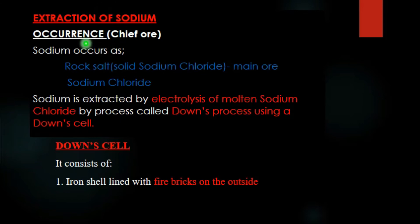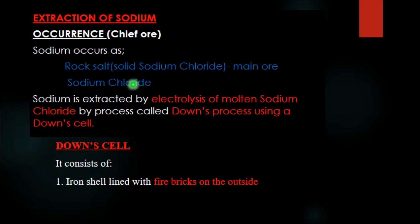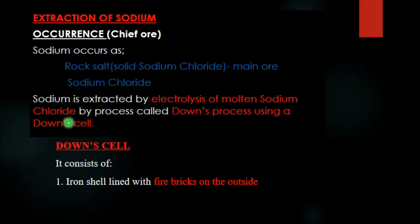Extraction of sodium: sodium occurs mainly as rock salt. The common name of rock salt is solid sodium chloride — this is the main ore. Sodium is a very reactive metal, therefore it is extracted by electrolysis of molten sodium chloride by a process called the Down's process, which occurs in a cell called the Down cell.